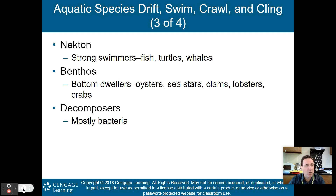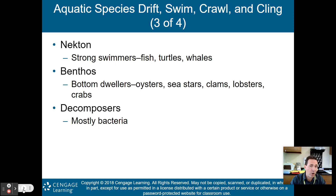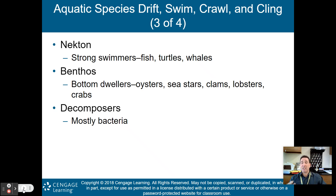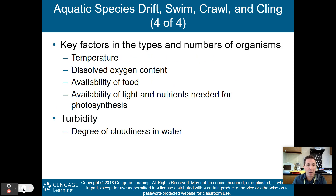Benthos are your bottom dwellers, living on the bottom of aquatic ecosystems — oysters, sea stars, clams, lobsters, and crabs. And then you have the decomposers, mostly bacteria that decompose organisms that have died and fallen to the bottom of the ocean.